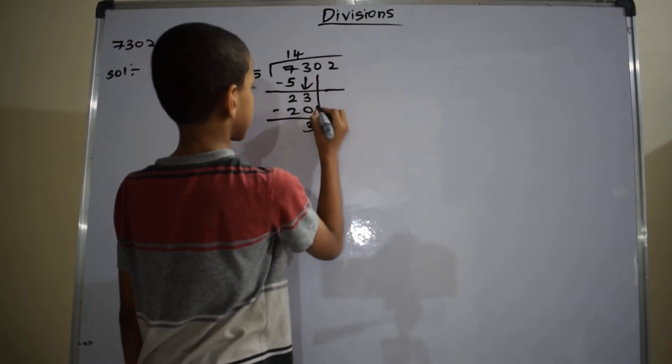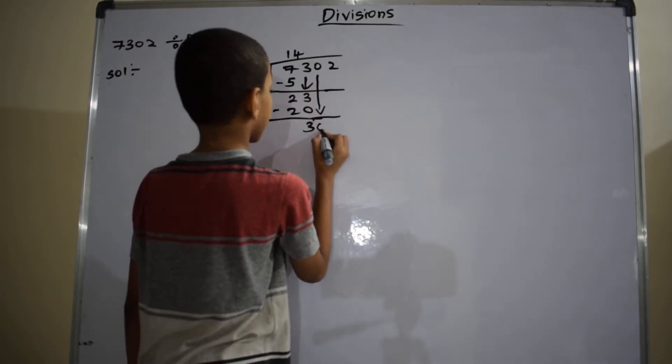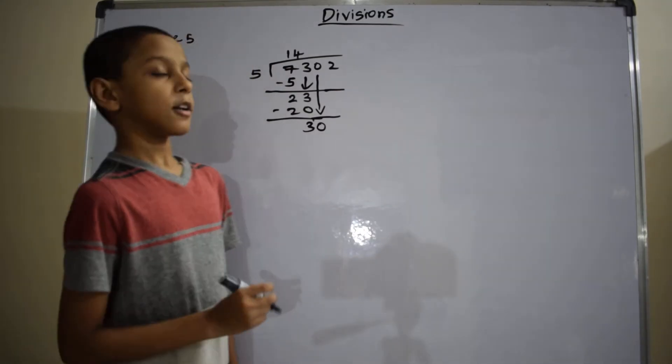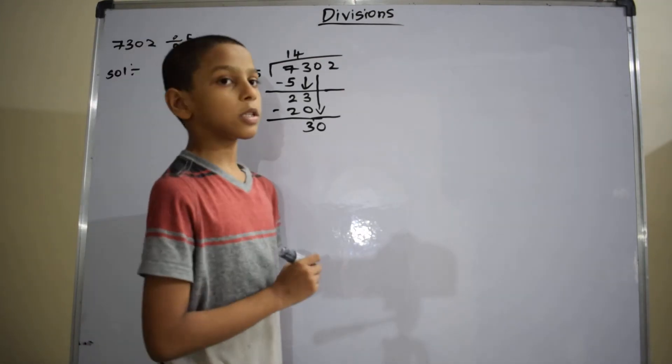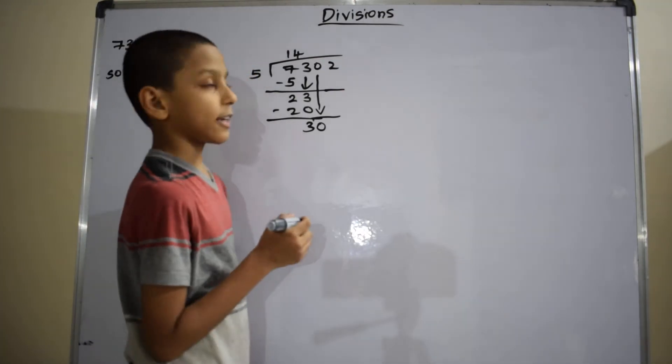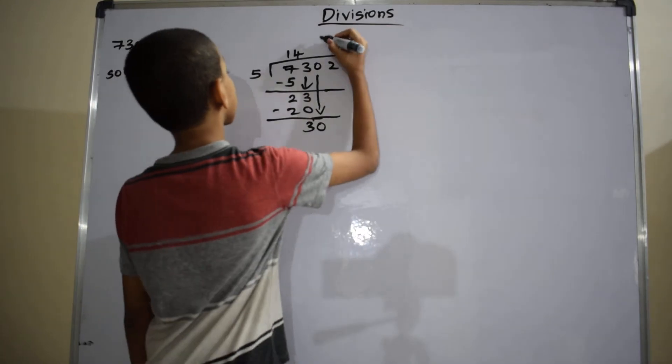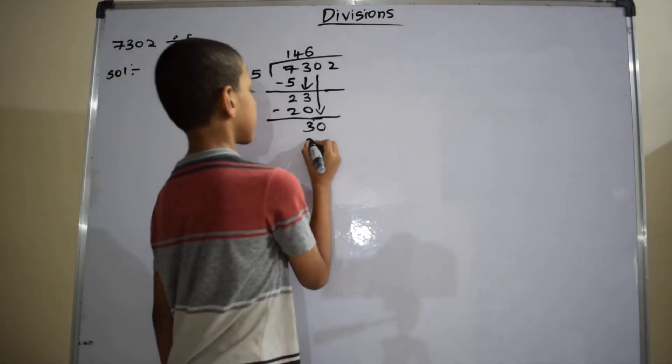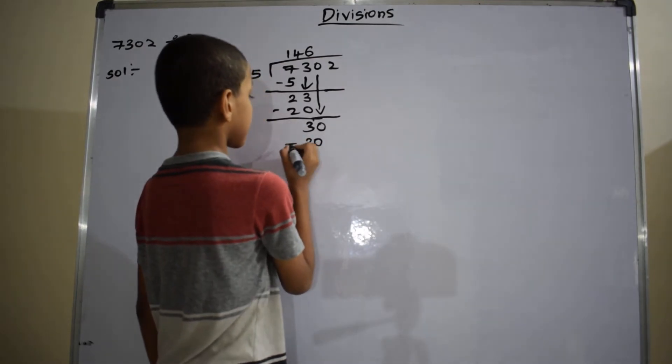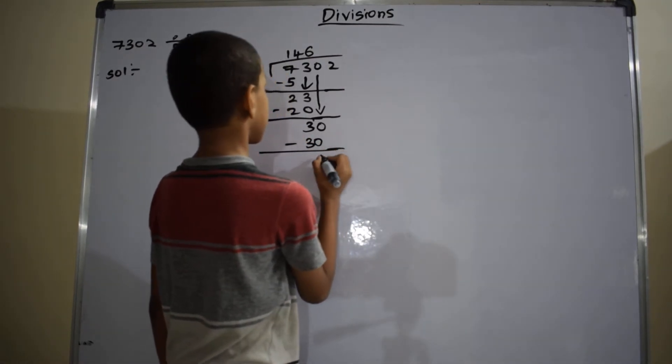Bring down this 0 here. Then it becomes 30. Recite the table of 5 mentally until you get 30. So 6 times 5 gives 30. The quotient is 6. Write the quotient here and write 30 below the 30 and subtract it. 30 minus 30 equals 0.